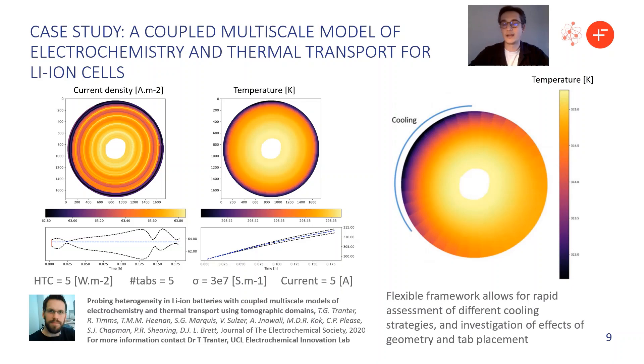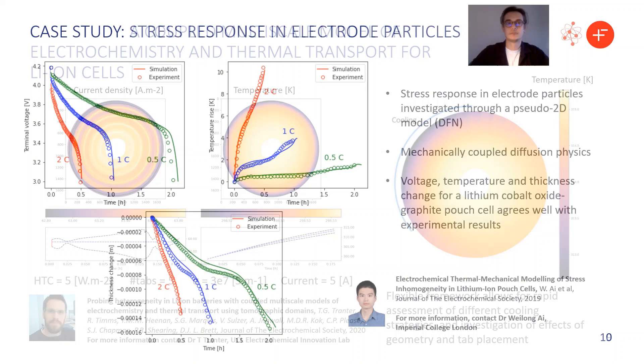You can use this to do things like investigate different cooling strategies or understand how the location of tab placements or the number of tabs affects cell performance. And this really is just a nice example of the extensibility of PyBaMM. It lets you do things beyond what it was originally designed for.